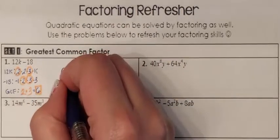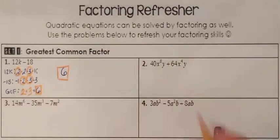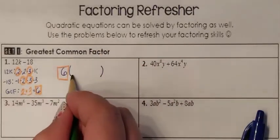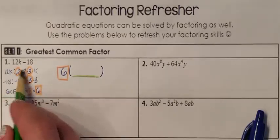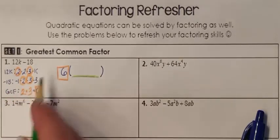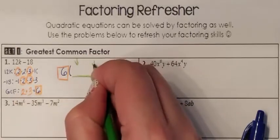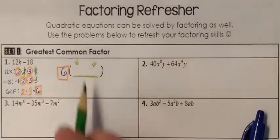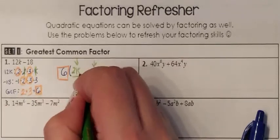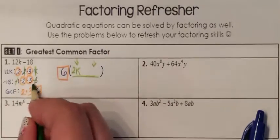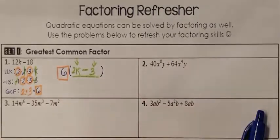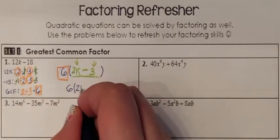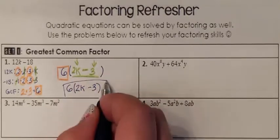They had a GCF in common, and now I need a parenthesis of what was left behind. What was left behind is what's in each list. List 1 gets its own and list 2 gets its own leftovers. I see a 2 and a K — 2 times K is 2K. Then I see a negative 1 and a 3 — negative 1 times 3 is negative 3. So I saw that they had a 6 in common, and when I divided 6 out of each, I had 2K minus 3. This is how we go over it in Algebra 1.